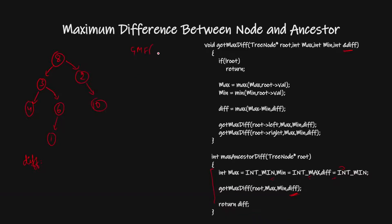So my root is 8. My max was initialized with the minimum value, so max(min_int, 8) gives 8 as the maximum. And min(max_int, 8) gives 8 as the minimum. So currently max is 8 and min is 8. Their difference is 8 minus 8 = 0, which is greater than the initialized difference, so I update difference to 0. Now I will call its left child.